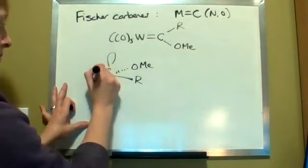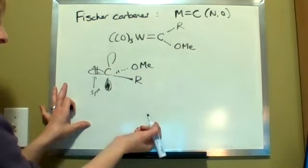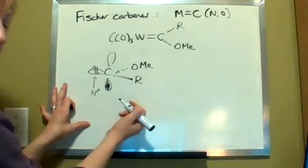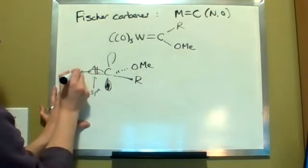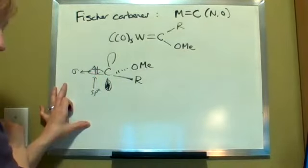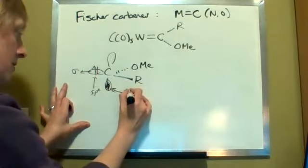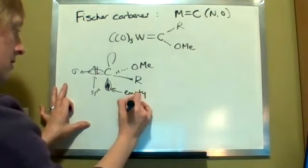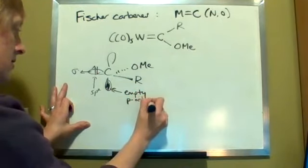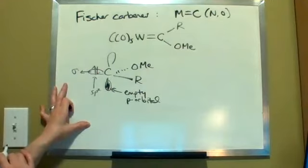Singlet means that both of those electrons are located, they're paired into one orbital like this, and that is what is doing that sigma bond to the metal center. Now here you have an empty p orbital that needs to accept electrons.